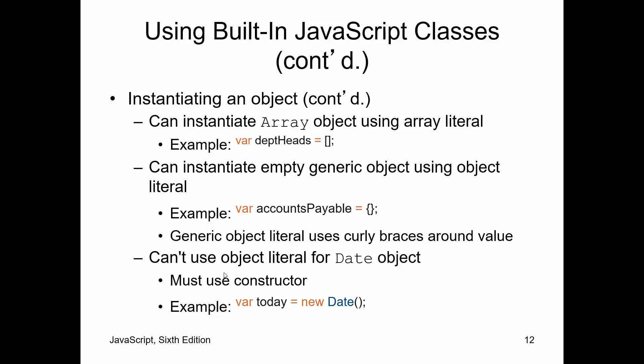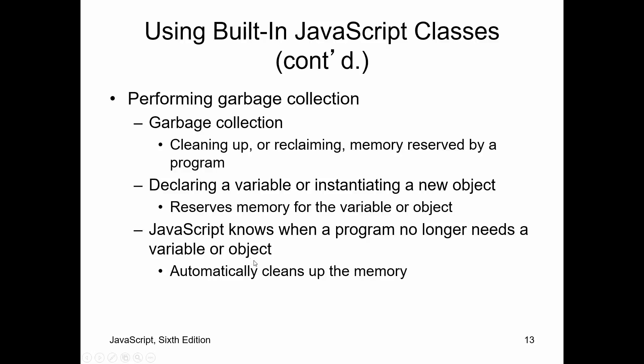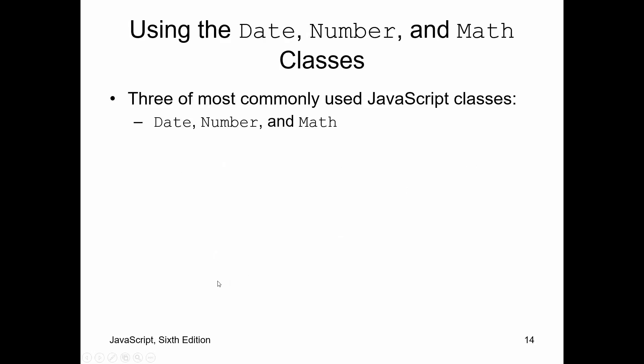You can create generic objects. Notice it's bracket, bracket here, and it's curly brace, curly brace here. That means that accounts payable is an object. You can create date objects that hold the date. Garbage collection is basically cleaning up or reclaiming memory reserved by the program. You don't have to worry about it typically because JavaScript does garbage collection for you. When you declare a variable or when you instantiate an object, you reserve memory. When JavaScript no longer needs that variable or object, it will garbage collect and automatically clean up the memory.